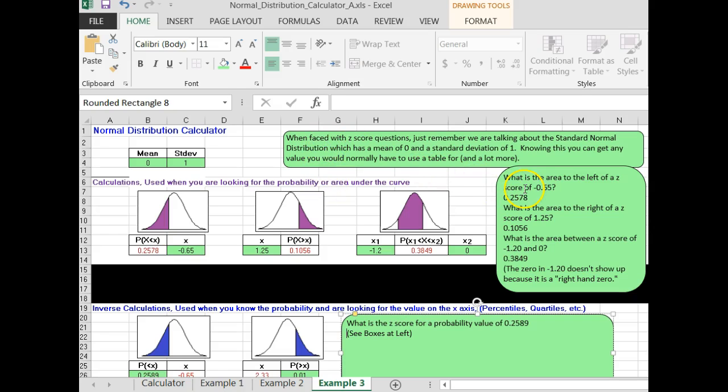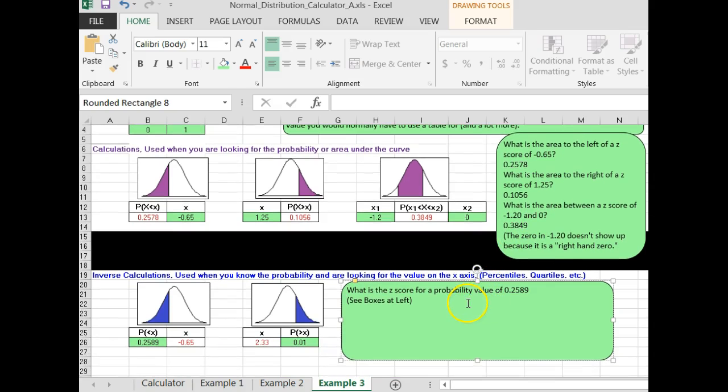What is the area to the left of a z-score of negative 0.65? What is the area to the right of a z-score of 1.25? What is the area between a z-score of negative 1.2 and 0? What is the z-score for a probability value of 0.285? It's just negative 0.65.